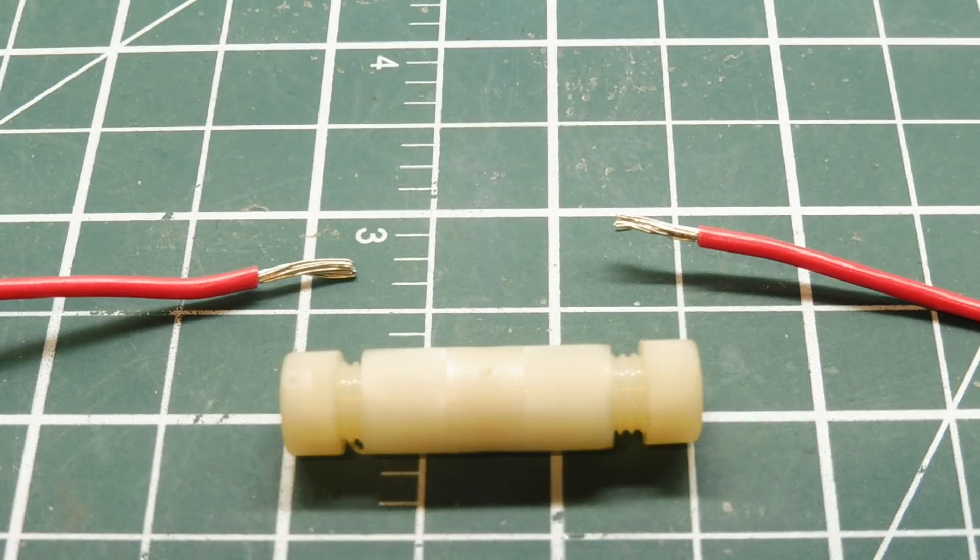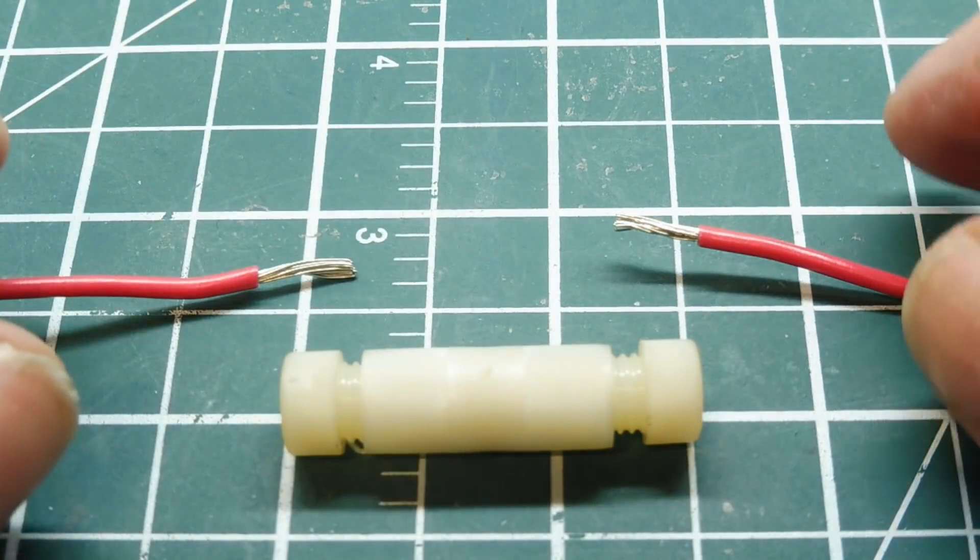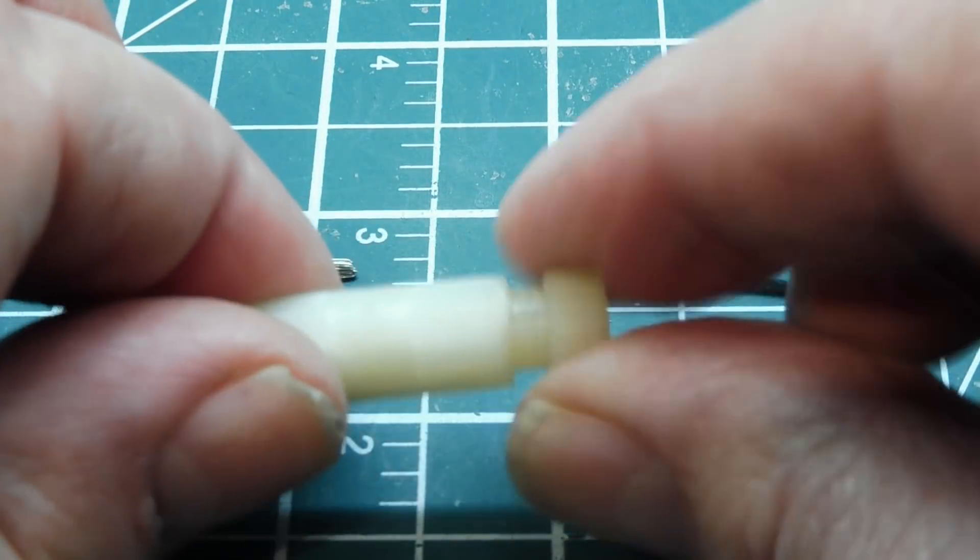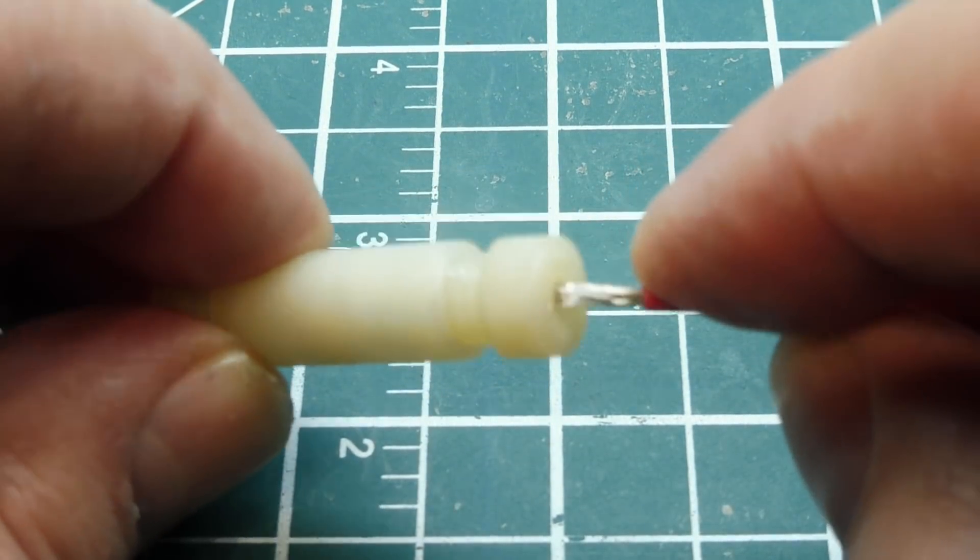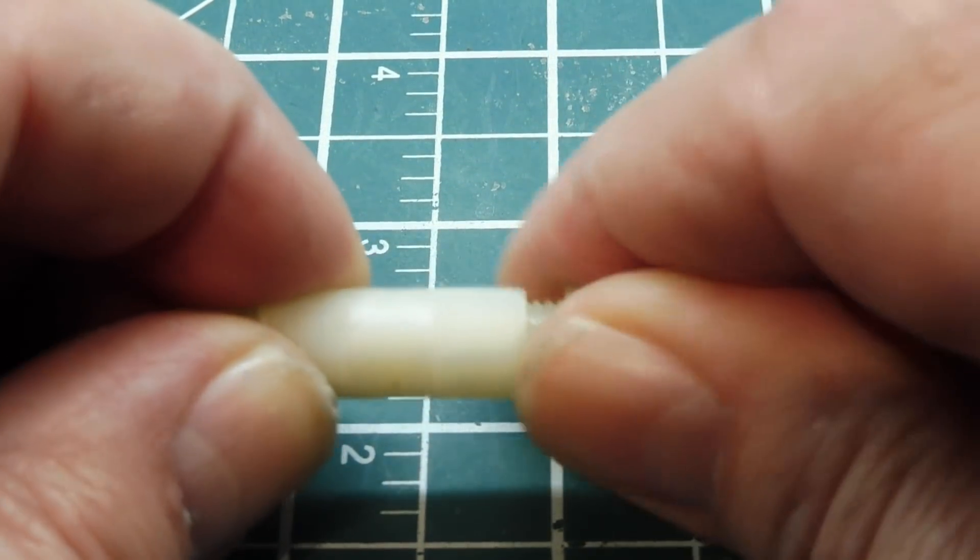Next we're going to look at a PosiLock connector. This is a no crimp solution. This is for repairing something very quickly, for connecting two wires together. We have our two wires that are stripped, and we loosen up the collar on the connector, and we put the wire in, push it in, and tighten up the collar.